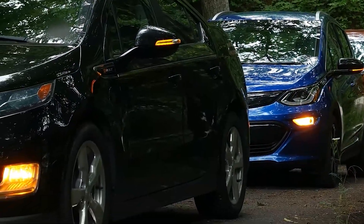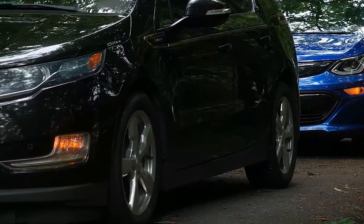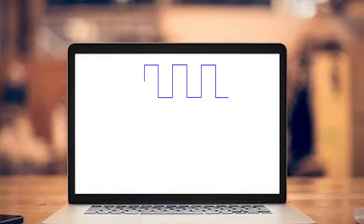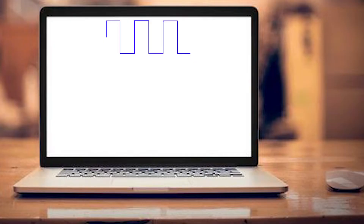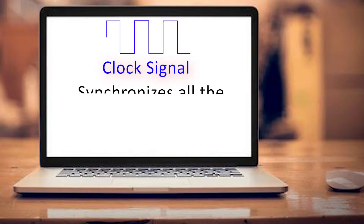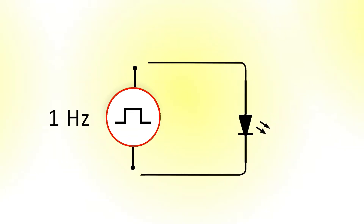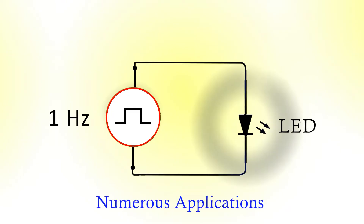From the blinking light of a car's turn indicator to the precise timing of a computer, square waves are common. A square wave generated inside a computer, also referred to as a clock signal, synchronizes all the operations within a computer. When a low-frequency square wave is connected across an LED, it blinks, and it has numerous applications.